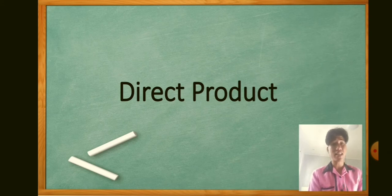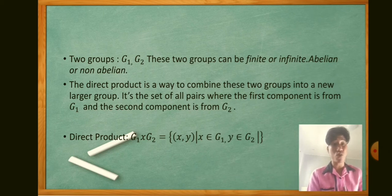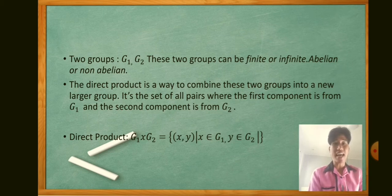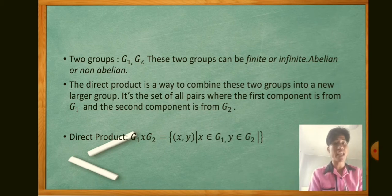So first is direct product. Direct product is just direct multiplication; however, it is used in abstract algebra. To determine a direct product, we need to have two groups, G1 and G2. These two groups can be finite or infinite, abelian or non-abelian. The direct product is a way to combine these two groups into a new, larger group.